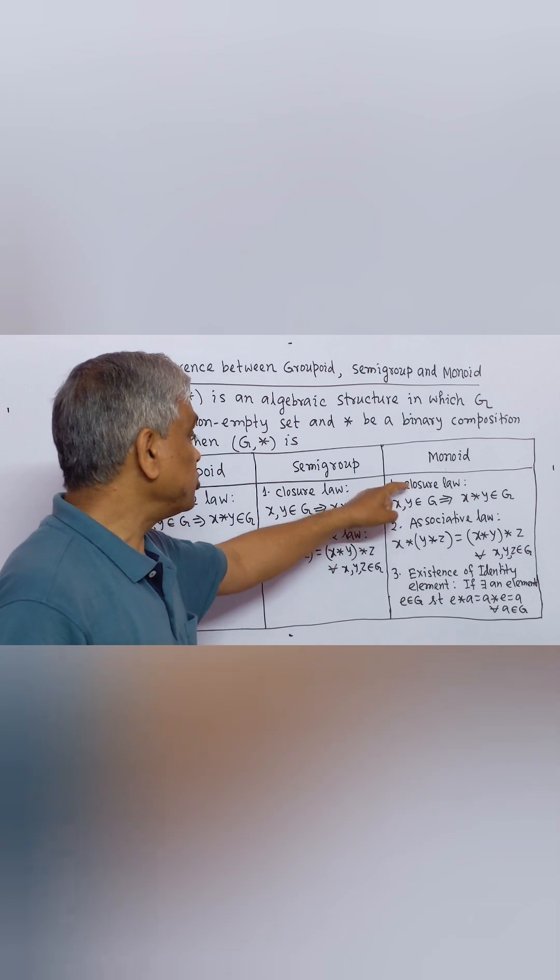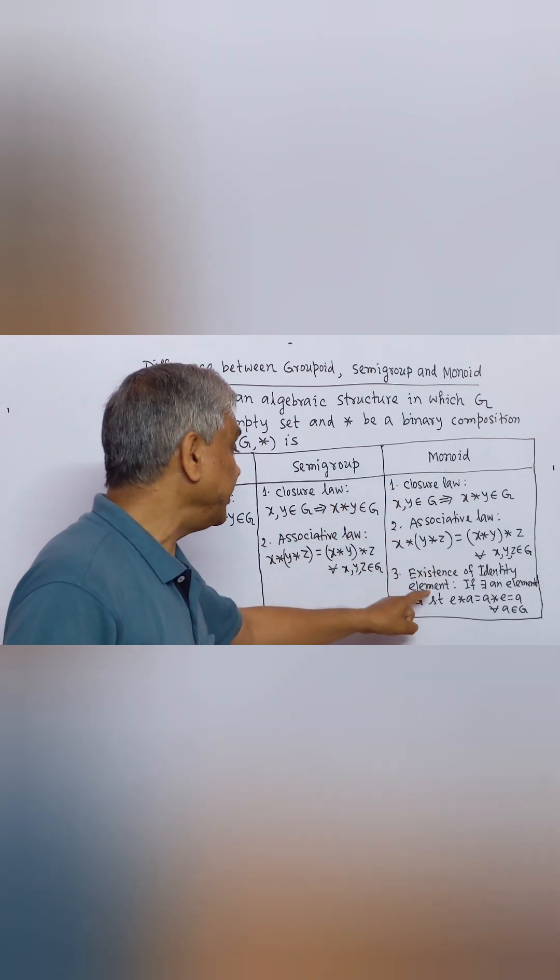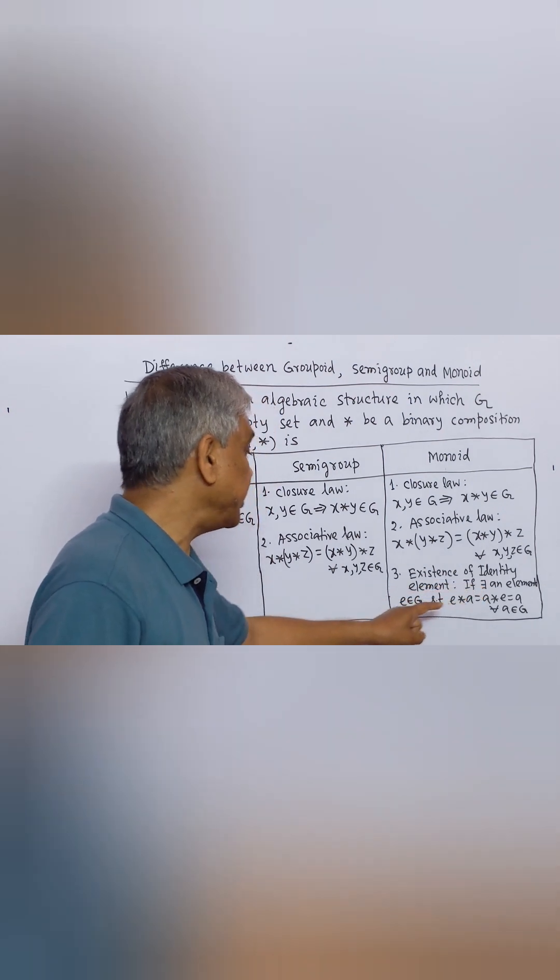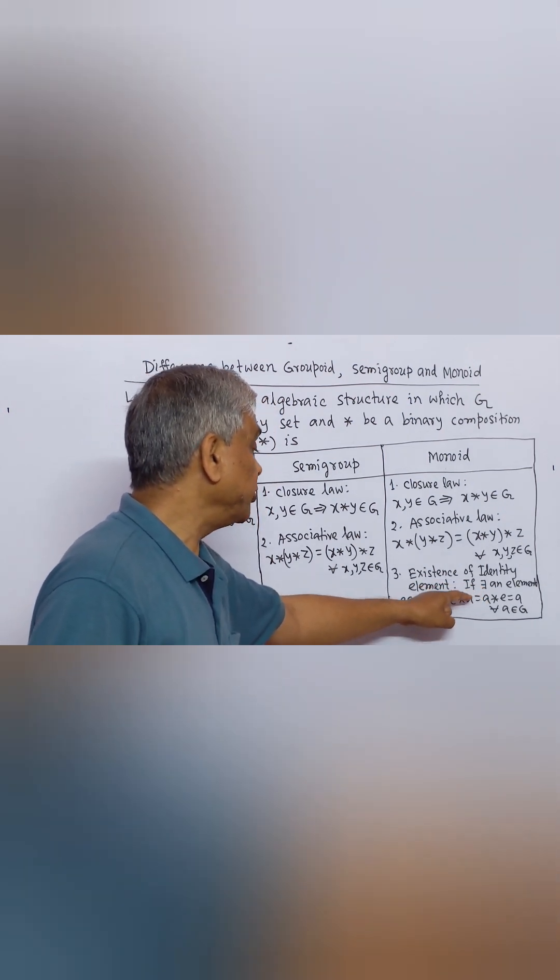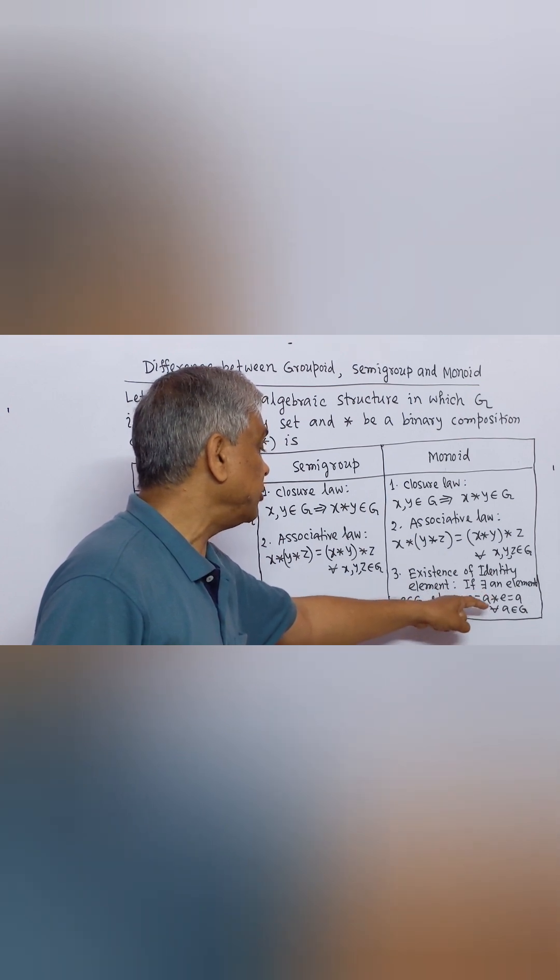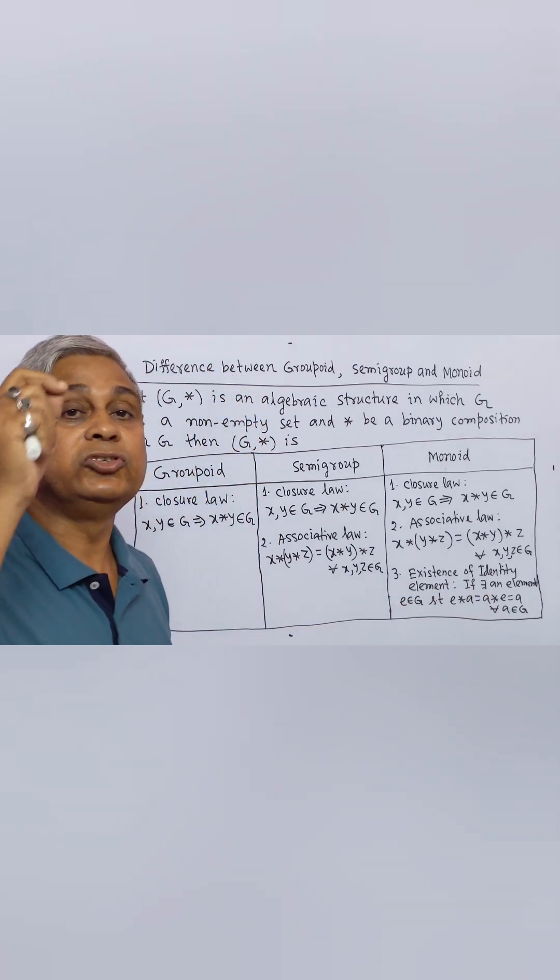Monoid if it fulfills closure law, associative law and existence of identity element. If there exist an element E belongs to G such that E binary composition A equal to A binary composition E equal to A for all A belongs to G.